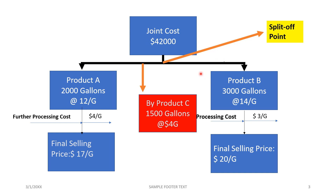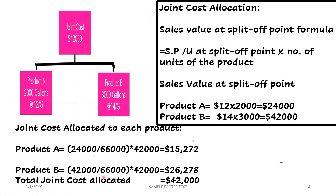Now let's work out an example to see how the sales value at split-off method works. We need to allocate the joint cost of 42,000 among product A and product B. First, we find the sales value at split-off point, which equals the selling price per unit of each product at the split-off point multiplied by the number of units produced.